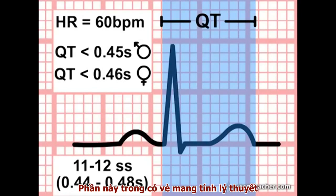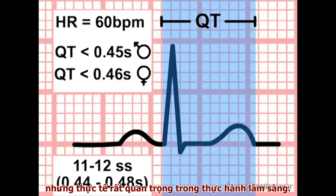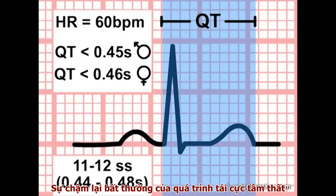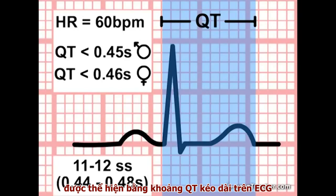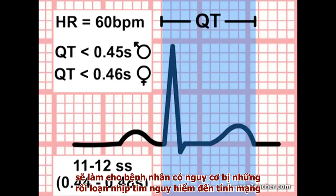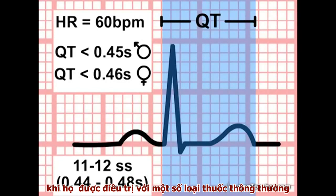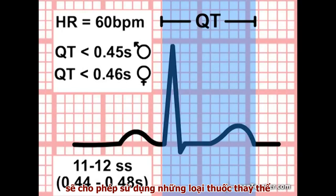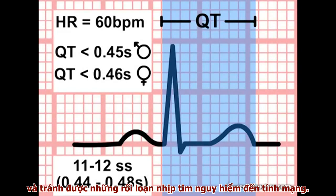The discussion which follows may seem academic, but it is important clinically. Abnormally slow ventricular repolarization, evidenced by a prolonged QT interval on the ECG, places patients at risk of fatal arrhythmias when treated with certain commonly used drugs. The ability to identify prolonged QT in these patients can lead to the use of alternative medications and avoidance of sometimes fatal arrhythmias.